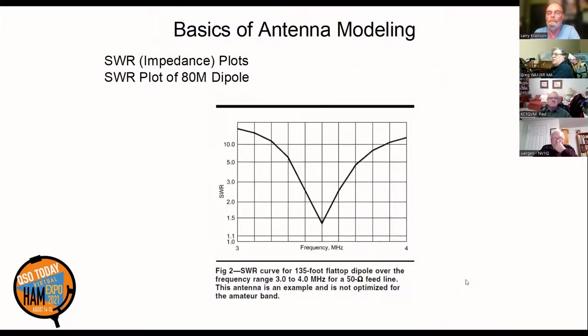You can also look at the impedance at the feed point of the antenna. Here you see an 80-meter dipole, 130-foot wire. Looking at the impedance over the 3 to 4 megahertz range, you see the SWR resonance dip at about 3.5 megahertz with about a 1.4 to 1 SWR.